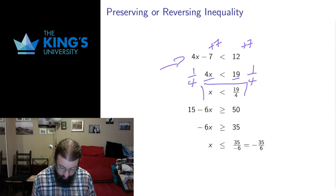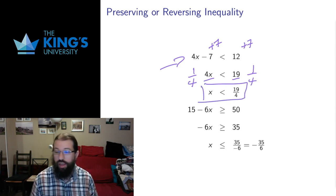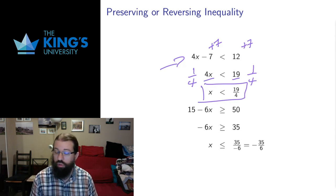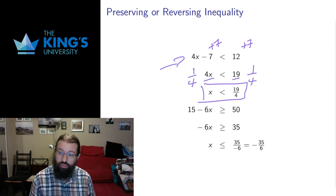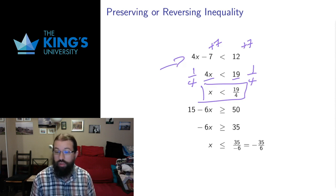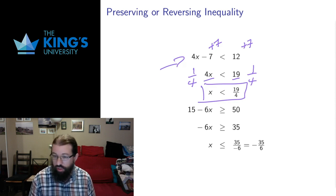That is my answer. I said in the previous video to expect ranges for answers — this is a range. This is a whole section of the number line: all numbers less than 19/4. So some small positive numbers and all possible negative numbers satisfy this, and I expected that.